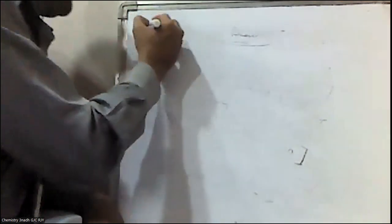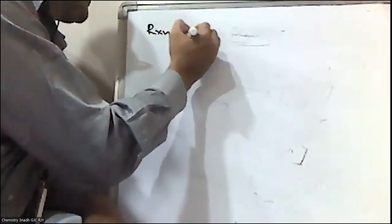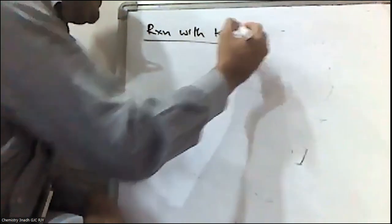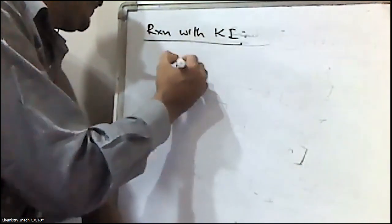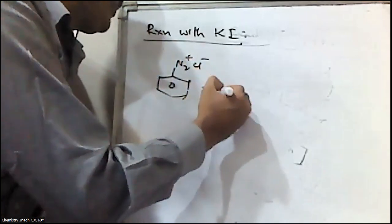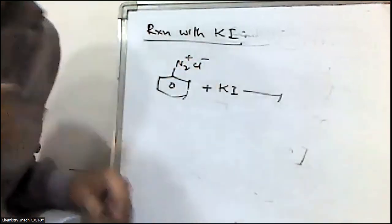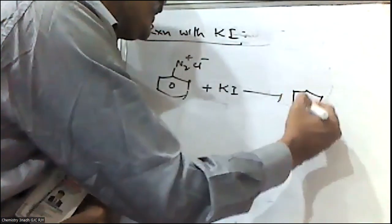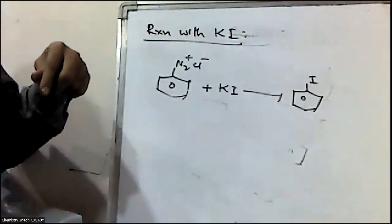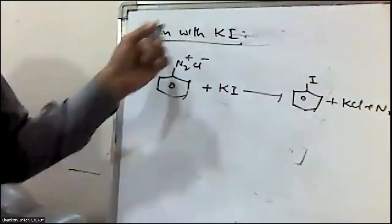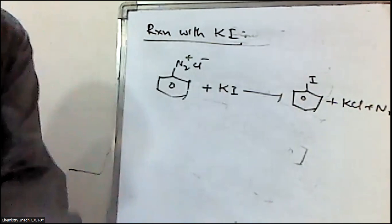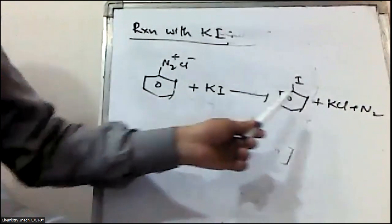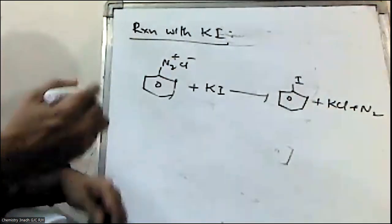The fifth one is reaction with potassium iodide. When benzene diazonium chloride is treated with potassium iodide, iodobenzene is formed.